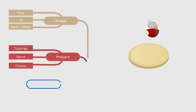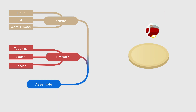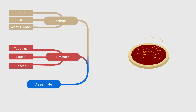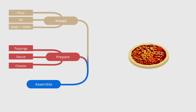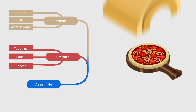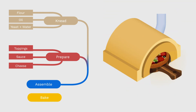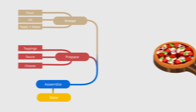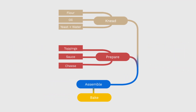Only when these two tasks are complete, I will be able to move on to the next task, which is putting all the items on the pizza base. And the final task can be baking the pizza. I have essentially broken down the process of baking a pizza into a workflow.